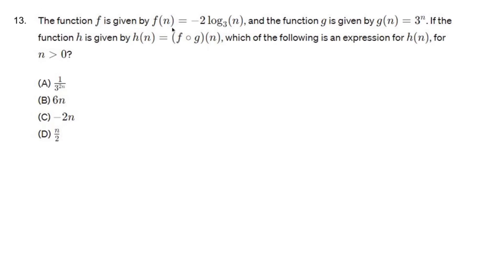The function f is given by f of n equals negative 2 log base 3 of n, and the function g is given by g of n equals 3 to the nth. If the function h is given by f of g of n, which of the following is an expression for h of n?